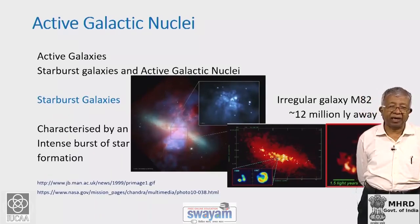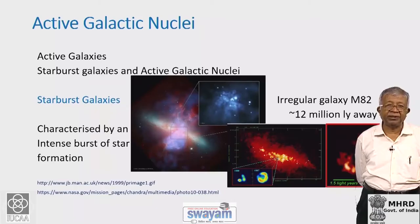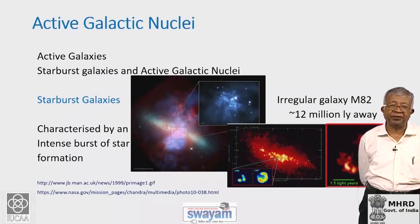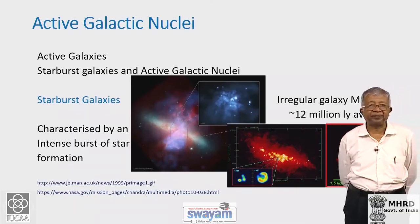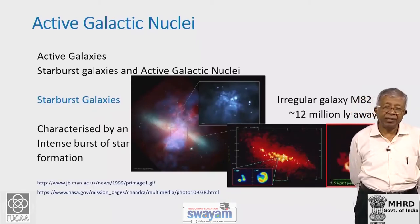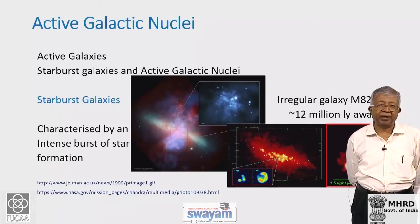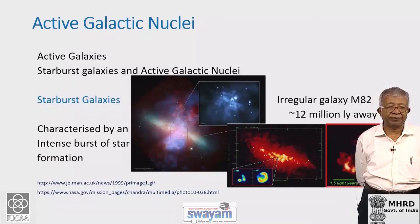This massive burst of star formation generates hot gas and relativistic plasma which expands and coalesces along the minor axis of the galaxy, carrying with it various components of the interstellar medium — including cold gas and metals — and populates the intergalactic or intercluster medium. Starburst galaxies are often found in infrared surveys, because dust gets heated by the hot newly formed stars, making them copious emitters in the infrared.